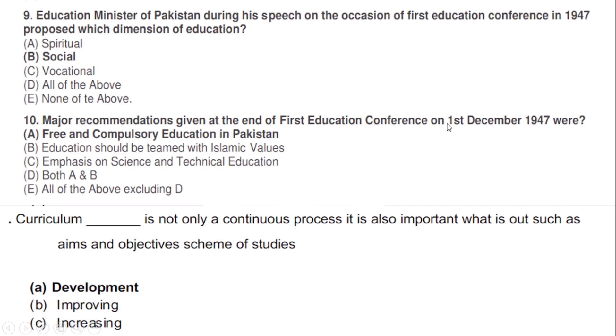During his speech at the first education conference in 1947, which dimension of education was proposed? Correct option B — social dimension. Major recommendations given at the end of the first education conference on 1st December 1947: correct option A — free and compulsory education.